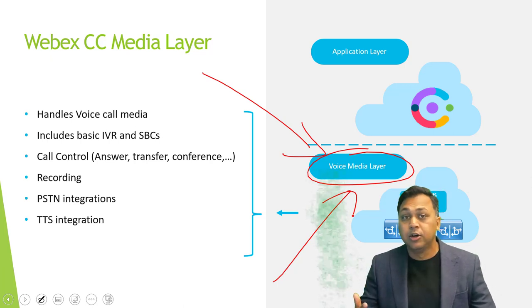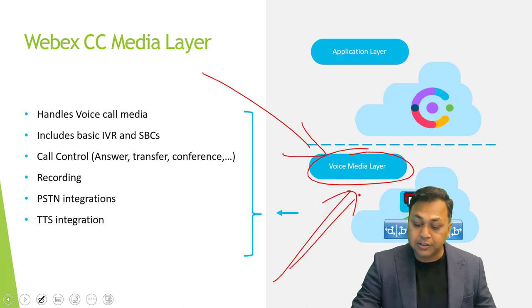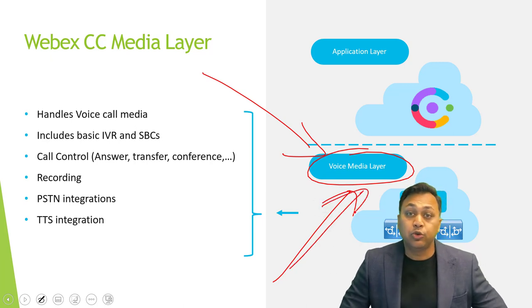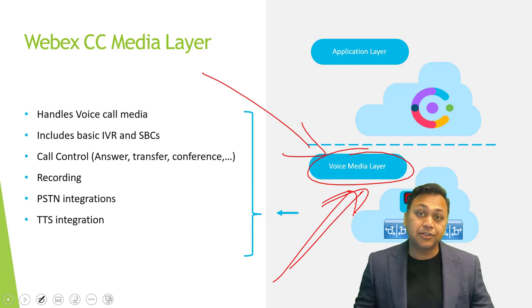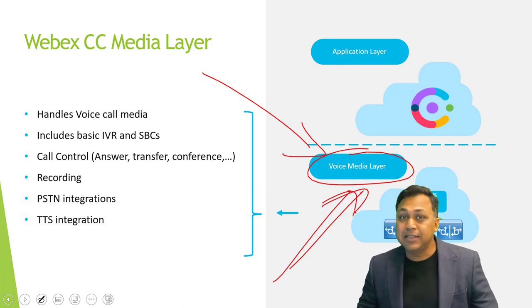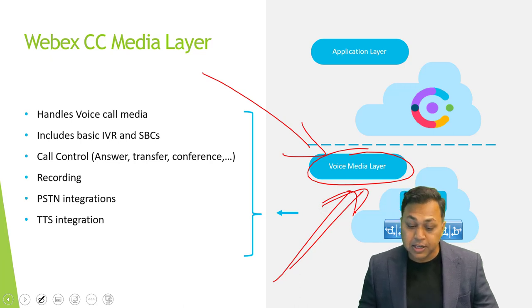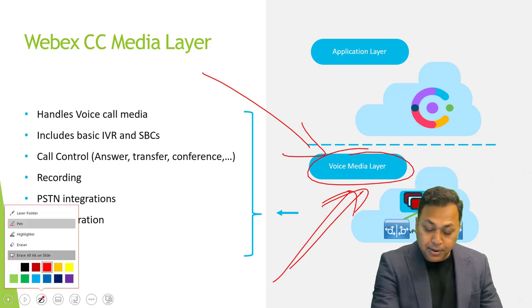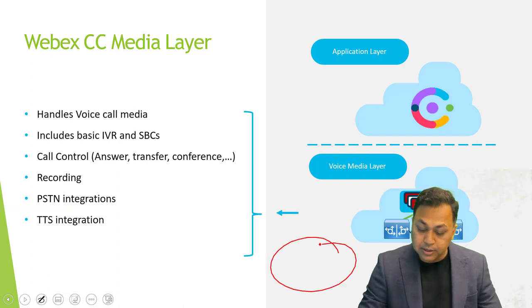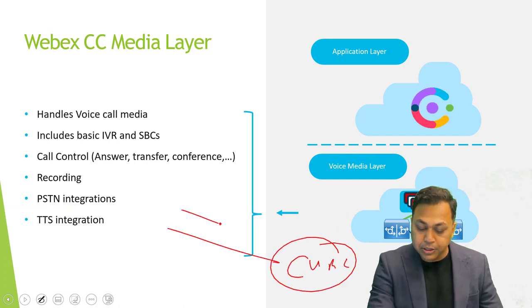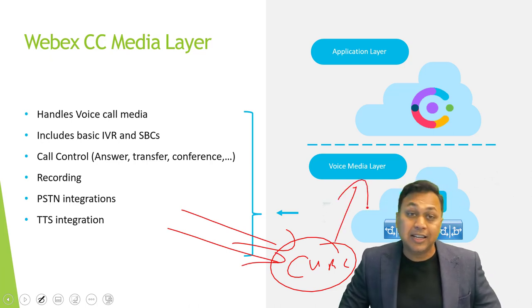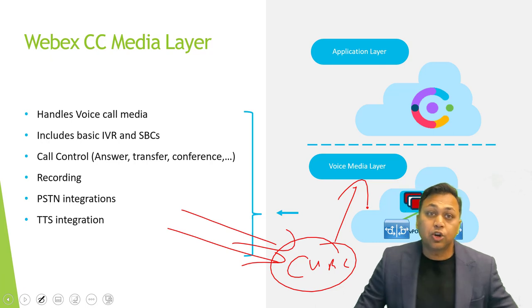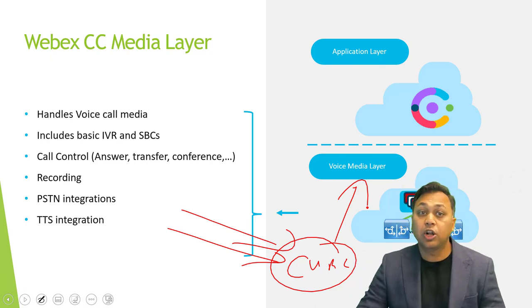Keep in mind that not just any third-party provider can communicate with WebEx directly — it has to be a Cisco-listed one. However, you can still use a third-party SIP by placing your own CUBE gateway in between; the third party communicates with the CUBE, and the CUBE communicates with your voice media layer.